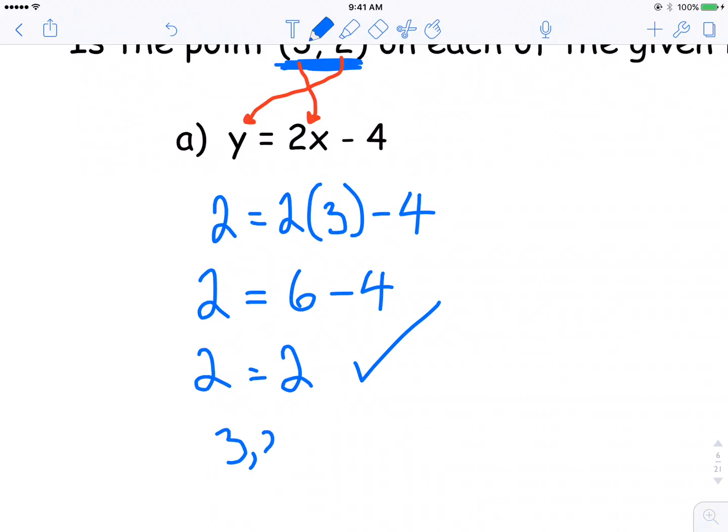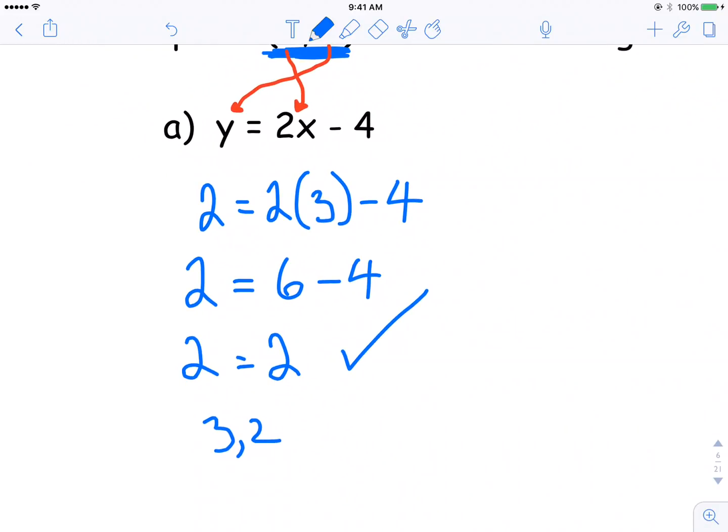So yes, this point (3, 2) is on the line y is equal to 2x minus 4. Simply stated, substitute in, see if it holds true. If it's true, then it's on the line.